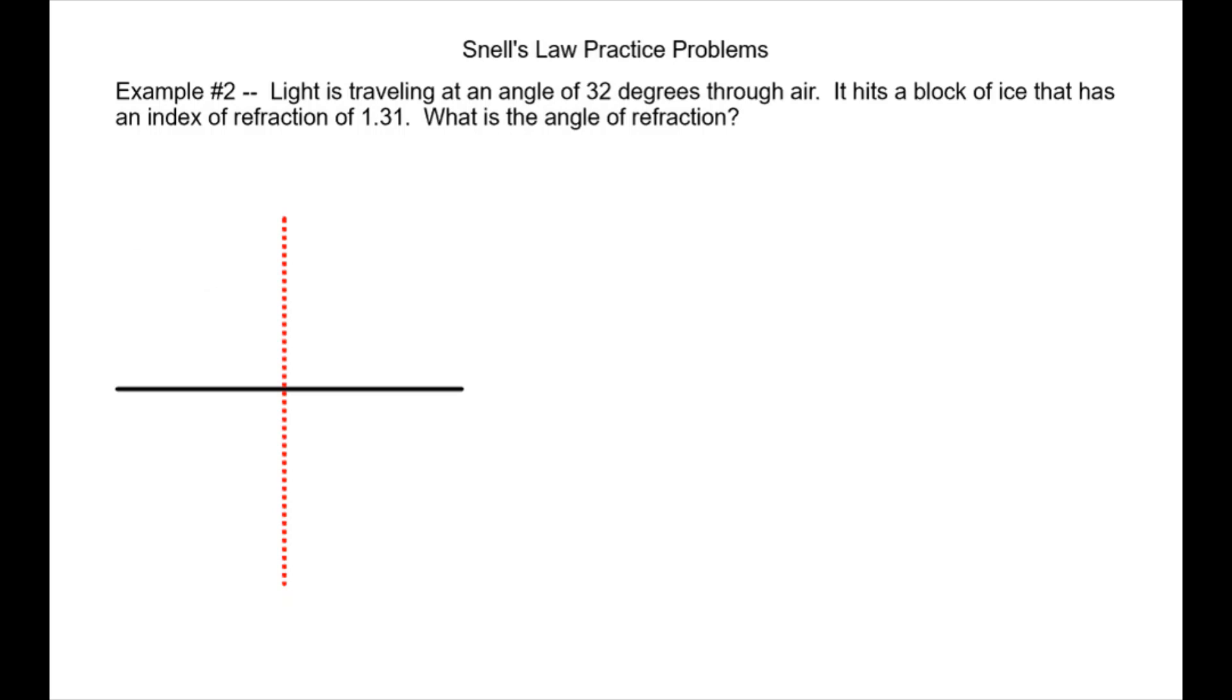Let's start filling in what we know. It's going through air again, that's the top medium. Angle 1 is 32 degrees and we know n1 is air so it's 1.0. Then it's going to hit the ice which has an n value of 1.31, so that's n2, and what we don't know is this angle right here so we're going to leave that as angle 2.